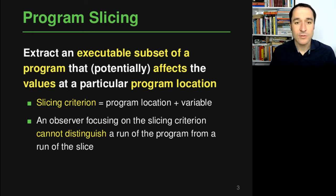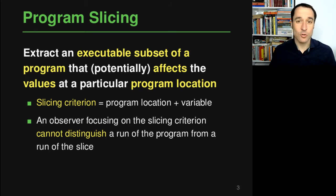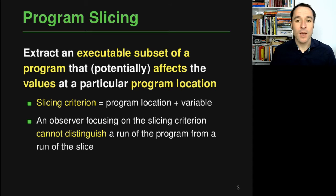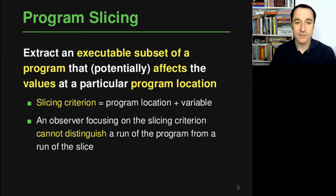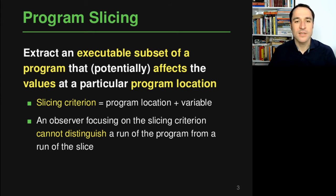The idea is that once the slice has been executed, an observer of this program — be it someone who looks at the code or someone who executes the code — should not be able to distinguish the full program from the slice, as long as that observer is only interested in the slicing criterion. Essentially, for the observer the slice and the full program look the same, as long as they are only interested in a particular location and the value that a particular variable has at that location.